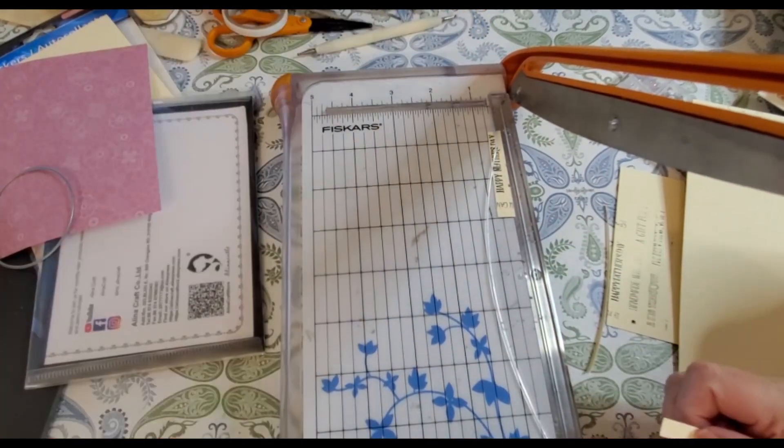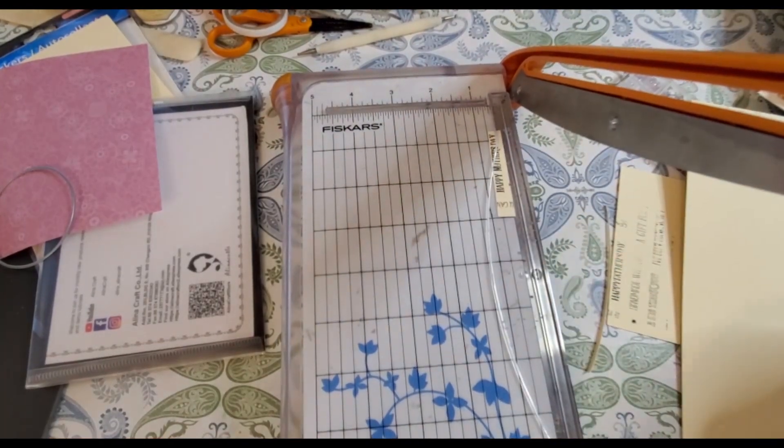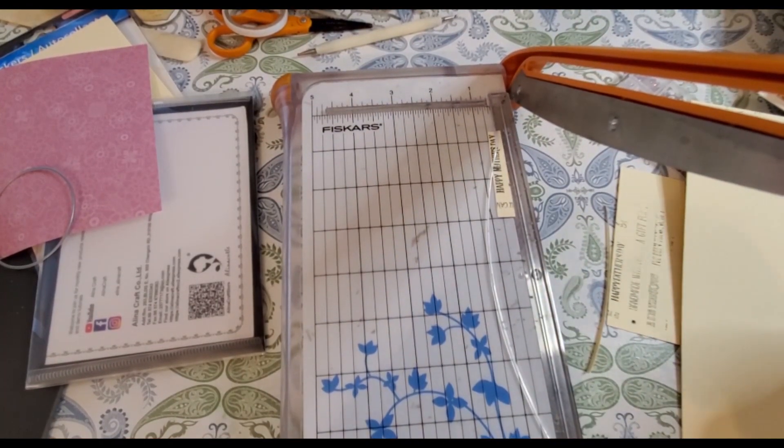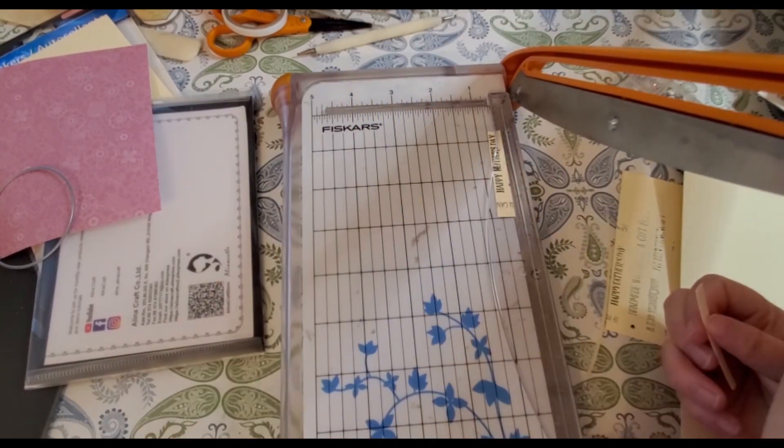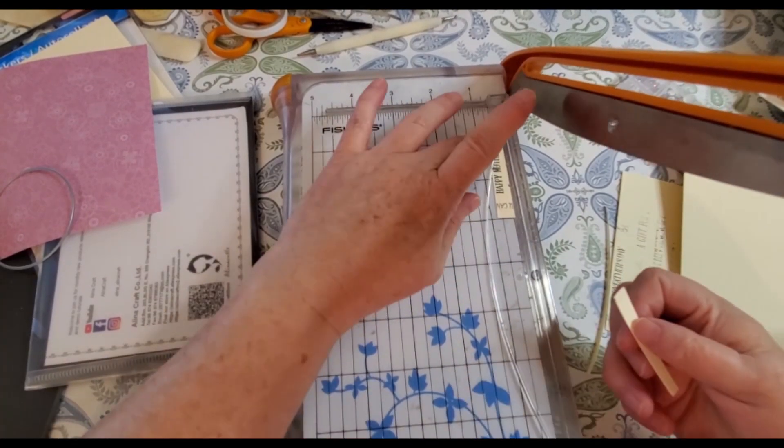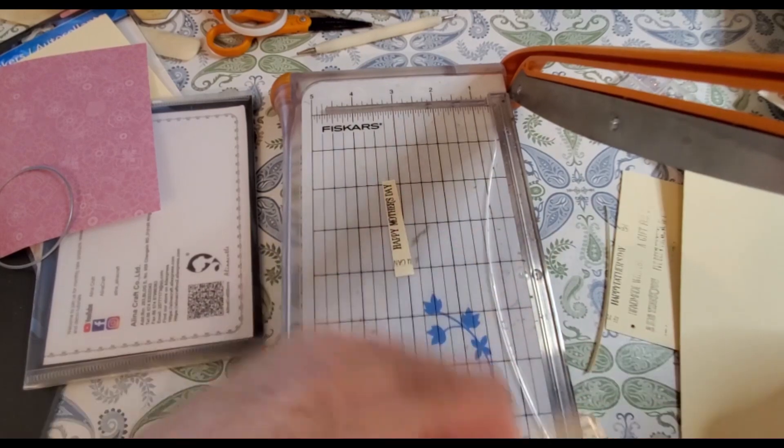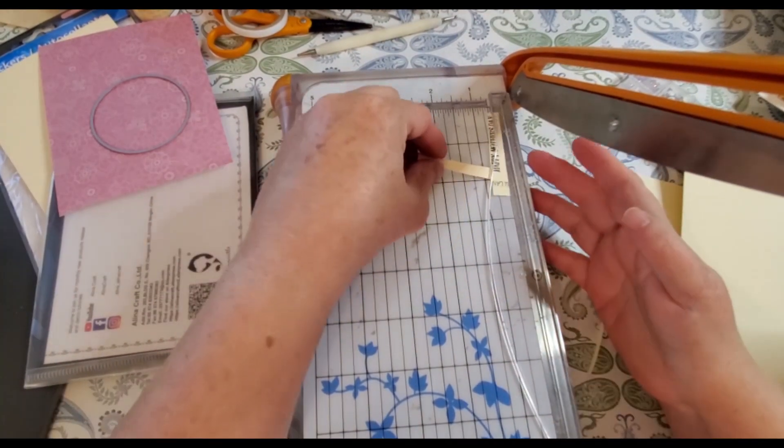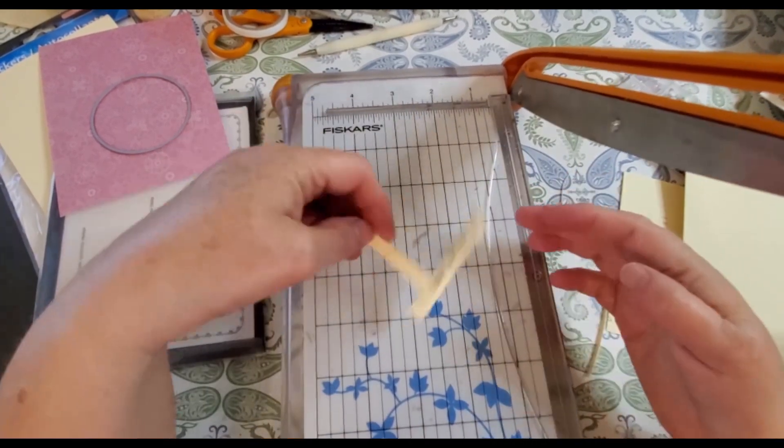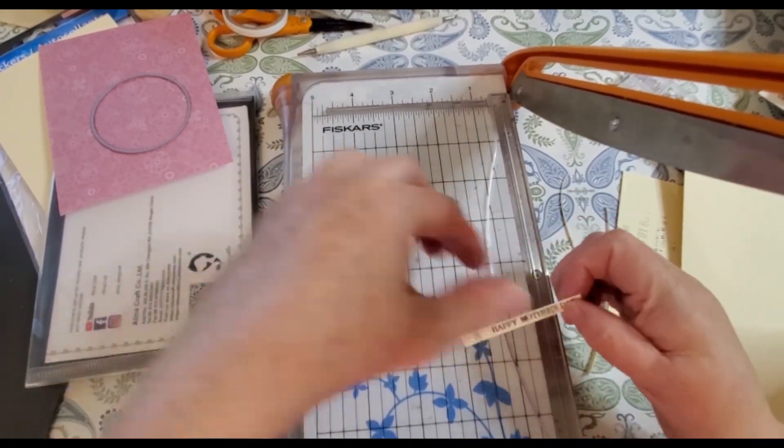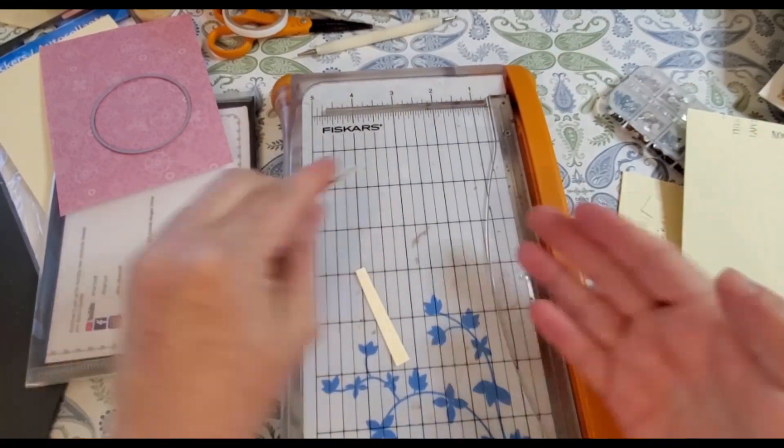I'm going to use a Zig pen because it'll make temporary adhesive on the end of a piece of cardstock. I need to make a little handle because I could not get this in my trimmer straight enough. Since it's temporary adhesive, I can just pull it right off and continue to cut it. Now that I've got my Happy Mother's Day sentiment all straightened out, we're going to continue on.